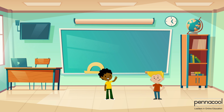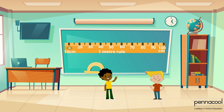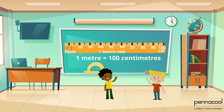Elijah wants to help his friend Zion understand how to convert meters to centimeters. He starts by showing him a meter rule. As its name suggests, it has a length of 1 meter. Observing the scale, we can see that there are 100 centimeters on the ruler. This is because 1 meter is equal to 100 centimeters.